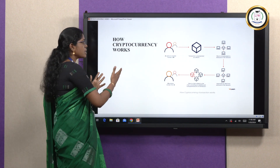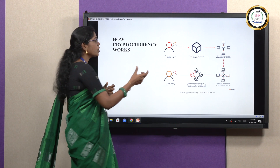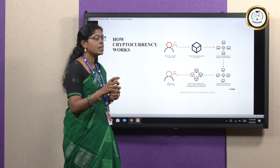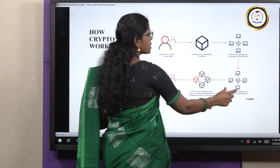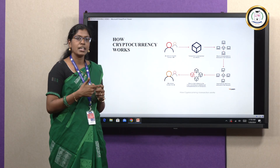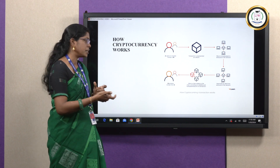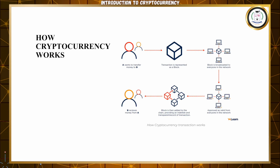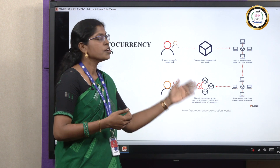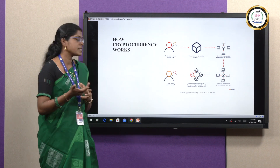In cryptocurrency, when person A wants to send money to person B, that particular transaction is represented as a block. The block is broadcasted to everyone in the network. Once the network approves it, that block is added to the chain. Once the block is valid and added to the chain, it is ineditable and transparent. Then person B receives money from A. Unlike traditional currencies, there is no intermediary person — person A sends money directly to person B.